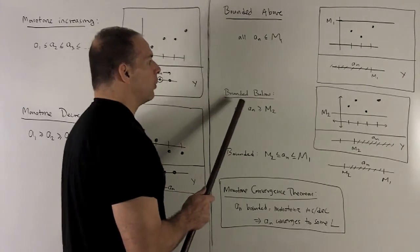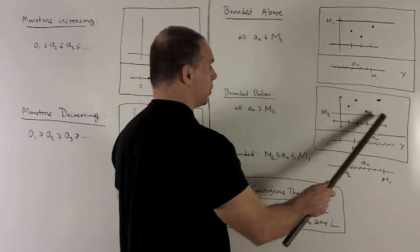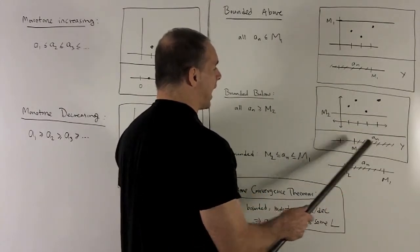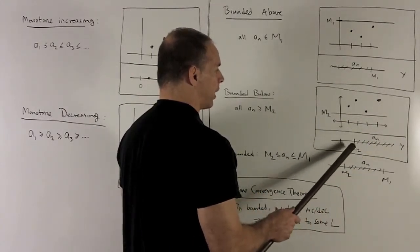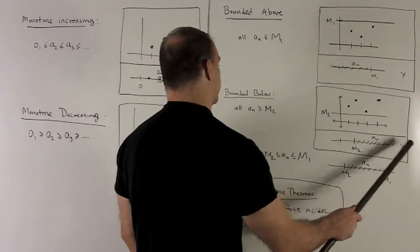If we're bounded below, same idea. You're going to draw your line, all your points are going to live above that line now on the graph. And then if I go to the y-axis picture, we draw off our m_2, and then everything's going to be to the right. All the a_n's are to the right.